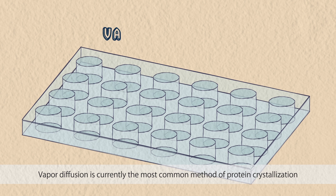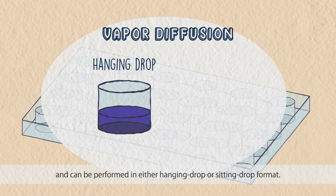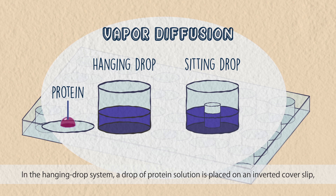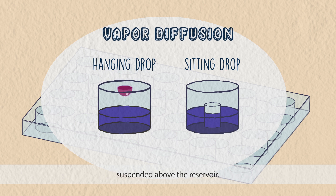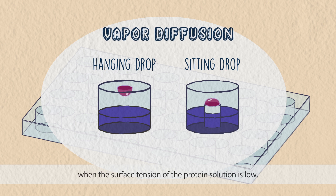Vapor diffusion is currently the most common method of protein crystallization and can be performed in either hanging drop or sitting drop format. In the hanging drop system, a drop of protein solution is placed on an inverted cover slip suspended above the reservoir. While in the sitting drop system, protein drops are placed on a pedestal inside the reservoir. The sitting drop system is usually applied when the surface tension of the protein solution is low.